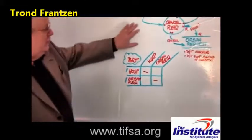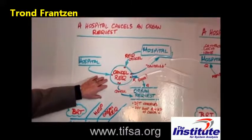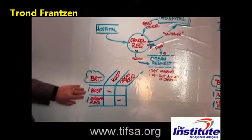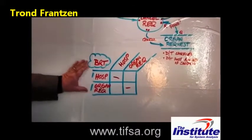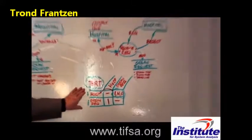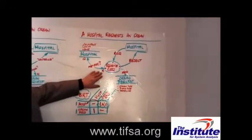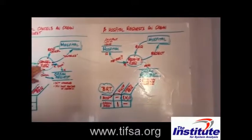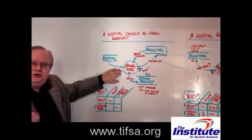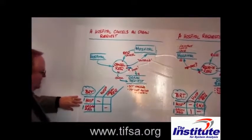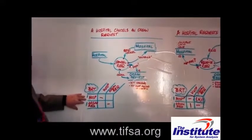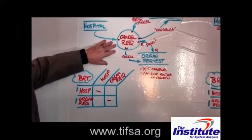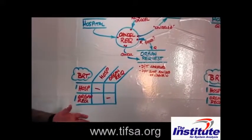I've prepared another business rules table for this process of canceling the request. It has hospital and organ requests, which are the two objects in the table. Interestingly, this table looks exactly like the table from the previous diagram, which was receiving the request. But receiving the request and canceling the request are two different contexts. Our questions this time have to be in the context of this process of canceling the request.